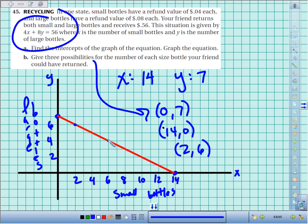Another one could be 6 and 4. We could have 6 small bottles and 4. There's a lot of different points. Those are just a few of them.